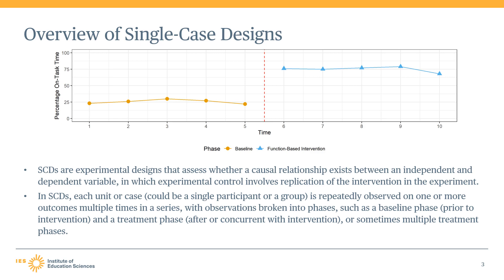As these modules progress, we will transition to black and white plots that are more closely aligned with what you are likely to see in practice when reviewing single case design studies. The plot presented here is an example of an AB design.